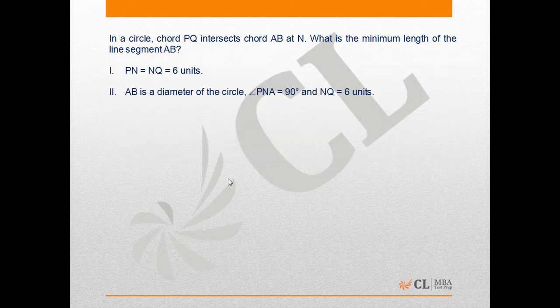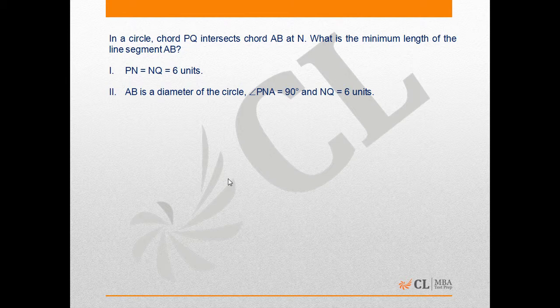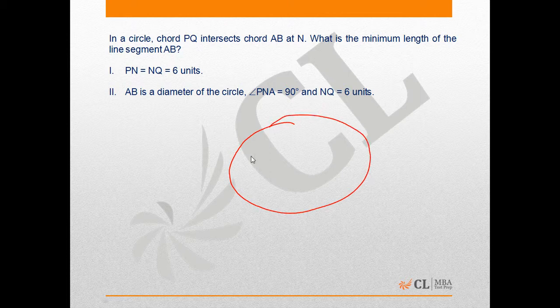If I read the question it says: in a circle, the chord PQ intersects chord AB at N. I can do this question in round one. So let us say this is a circle. The chord PQ intersects the chord AB at N. So this is PQ and AB, and they intersect at the point N. What is the minimum length of AB? So we need to calculate AB minimum, the length of AB minimum.